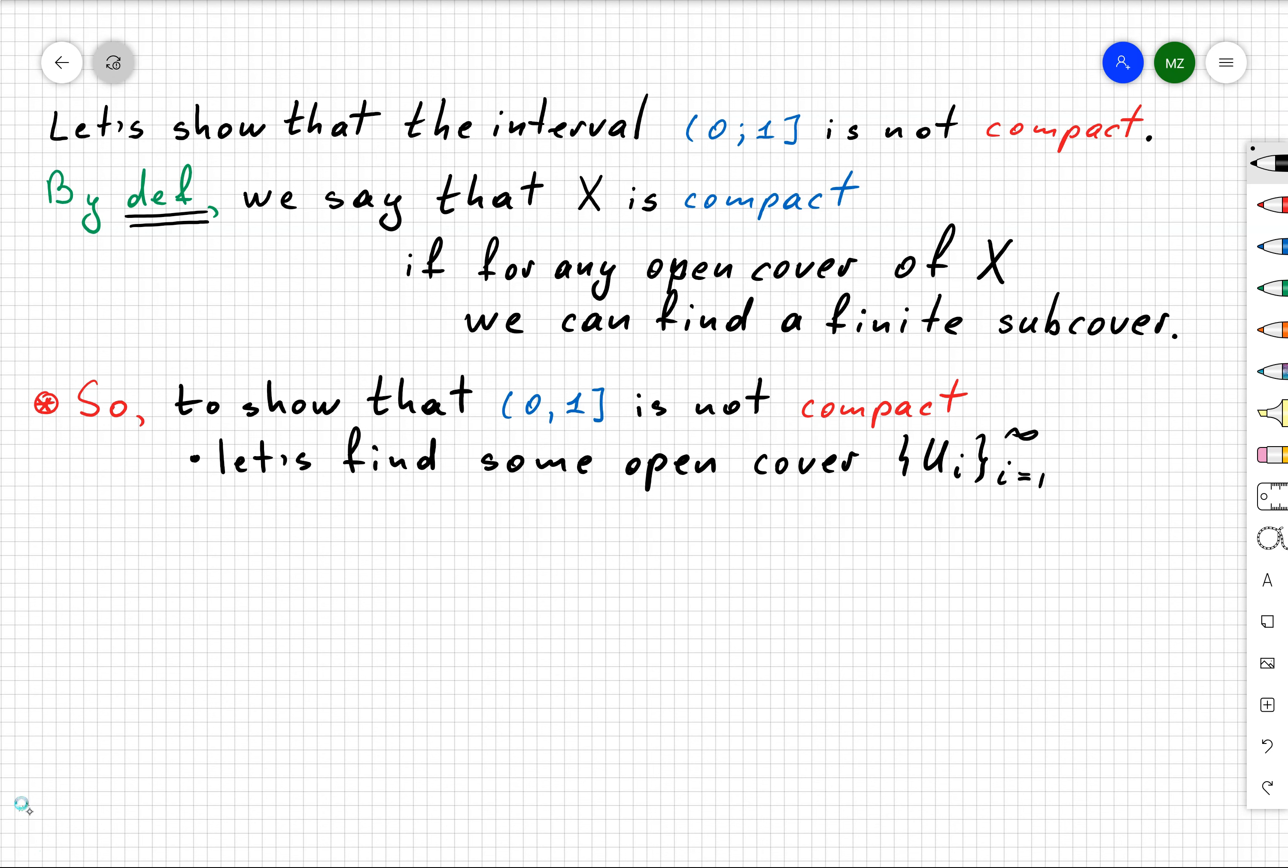In this particular case, I'm going to choose some open cover given by sets Ui. Then our goal is to show there is no finite subcover in that case.